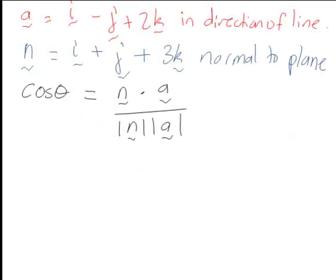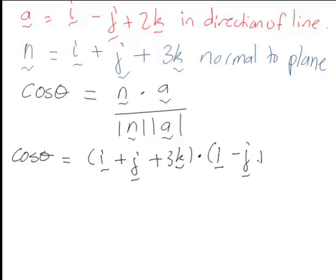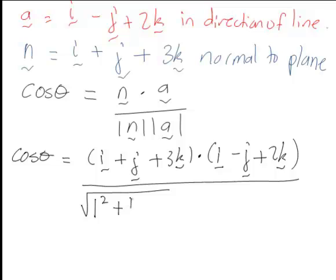So hence in this case that's going to be cos theta is i plus j plus 3k for the normal vector in a scalar product with i minus j plus 2k. And remember to work out the magnitude of a vector such as the normal, that's i plus j plus 3k, so the magnitude is the square root of 1 squared plus 1 squared plus 3 squared. Similarly for the magnitude of this one, 1 squared plus negative 1 squared plus 2 squared.